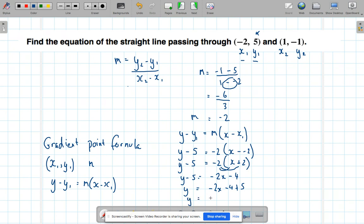So tidy that up, we get y = -2x - 4 + 5, or 5 - 4 is positive 1. That's the equation that joins a straight line.